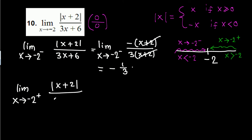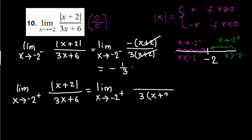For the right-hand limit as x approaches negative 2 from the right, we again factor the bottom as 3 times x plus 2. When x approaches negative 2 from the right, x is something like negative 1.99, so x plus 2 is approximately 0.01 — a positive number. The absolute value of a positive number is just that number itself, so absolute value of x plus 2 equals x plus 2. These cancel, leaving 1 over 3, so the right-hand limit is one third.